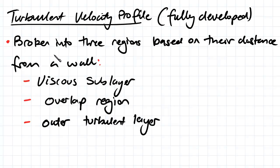Basically, we break it into three regions and that's essentially based on the distance from the wall. We start off with the wall and we've got our viscous sublayer. That's the region that is very close to the wall.